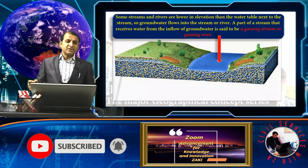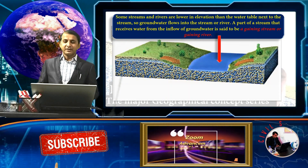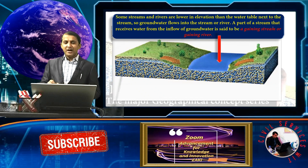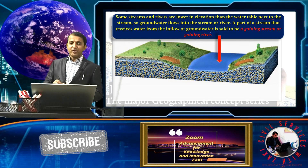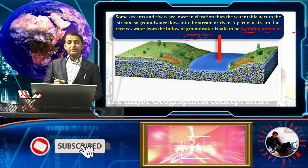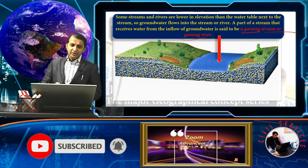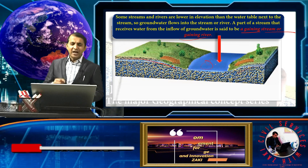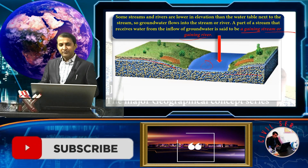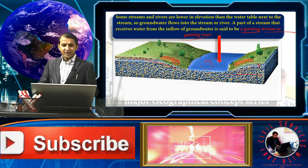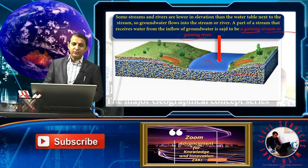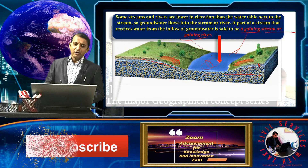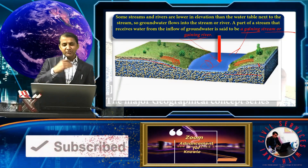Some streams and rivers are lower in elevation than the water table next to the stream, so groundwater flows into the stream or river. A part of the stream that receives water from inflowing groundwater is called a gaining stream or gaining river. This type of river or stream is formed below the water table, and the red arrows show groundwater flowing into the stream.